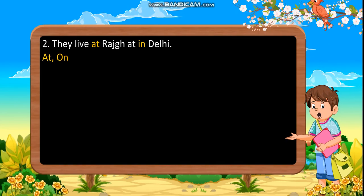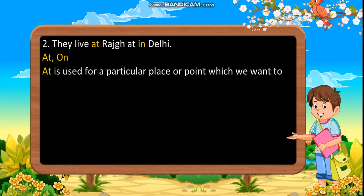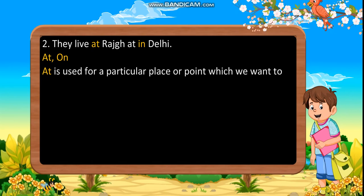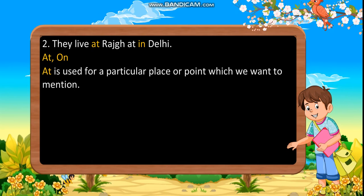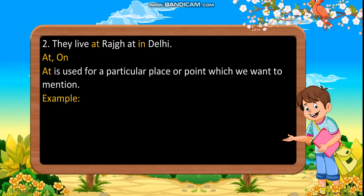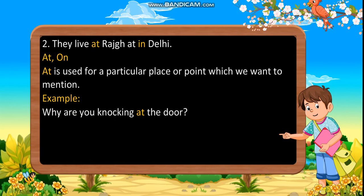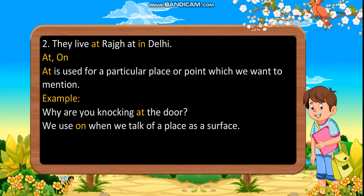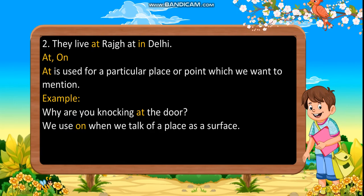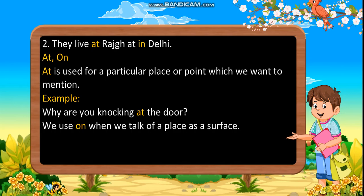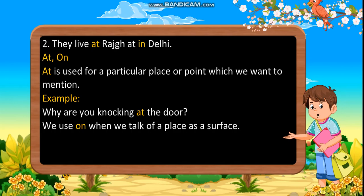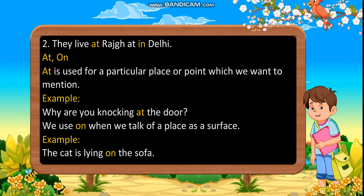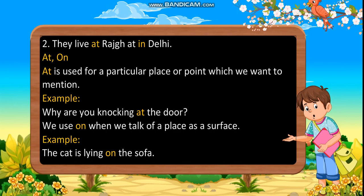At, on. At is used for a particular place or point which we want to mention. Example: why are you knocking at the door? We use on when we talk of a place as a surface. Example: the cat is lying on the sofa.